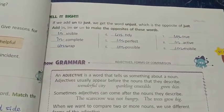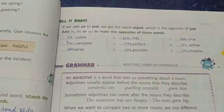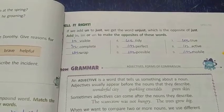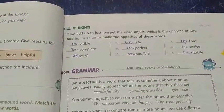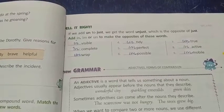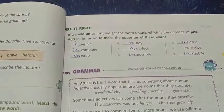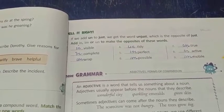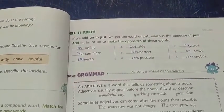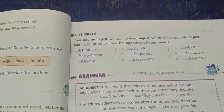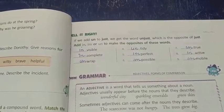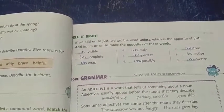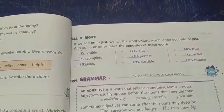Jaise ki book mein likha hai, jab hum word un ko ek word just mein jodte hai, toh ek naya word unjust banta hai, jo ki word just ke opposite, yani ulta hai. Words jaise ki in, im, un, ir, dis, etcetera ko hum ek main word ke aage lagate hai — aise words ko hum prefix kehte hai. Prefix mein pre ka matlab hai aage aur fix ka matlab hai lagana ya jodna.